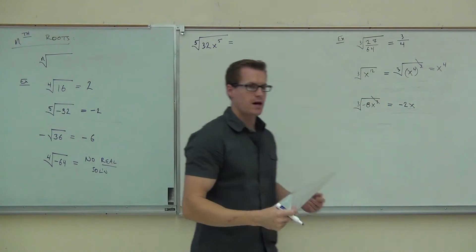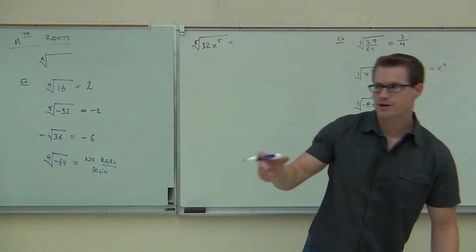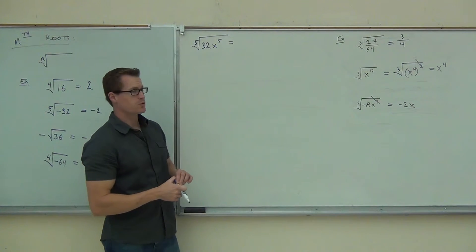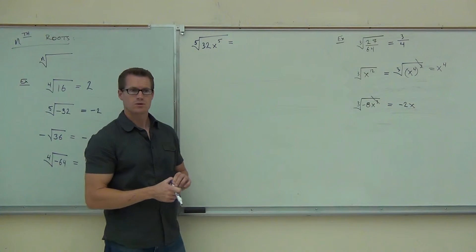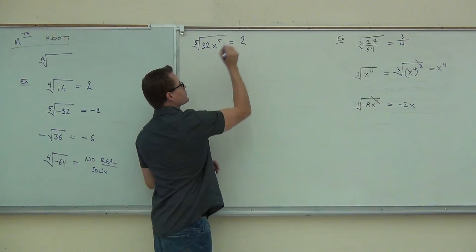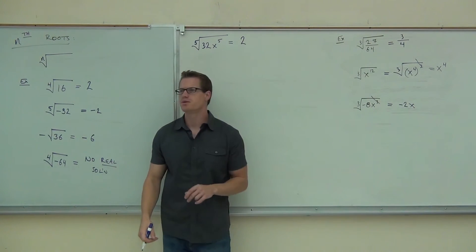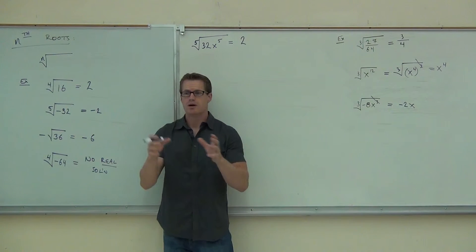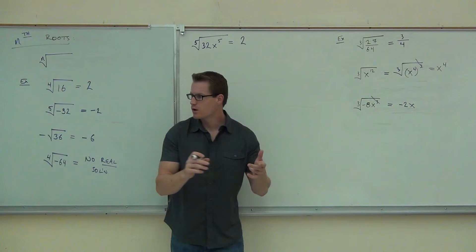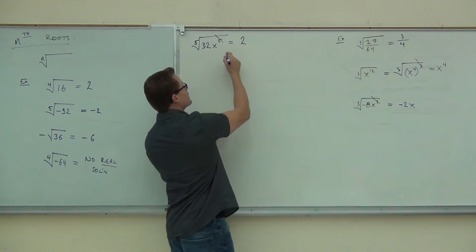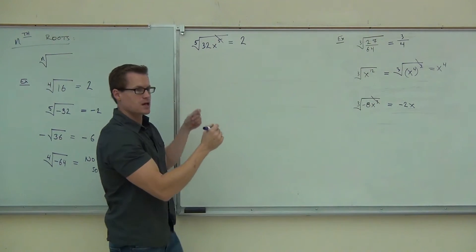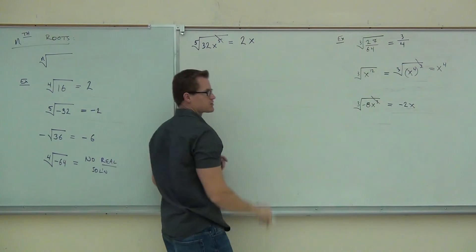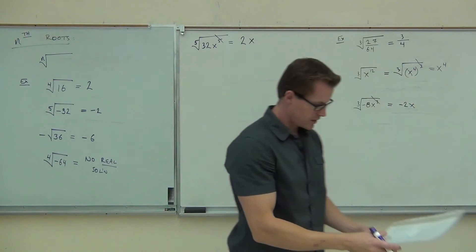Can we deal with variables inside of any type of root? Sure. What is the fifth root of 32? How about the fifth root of x to the fifth — can you do that? How much do you think it is? x. Exactly. The same principles apply. Fifth root, fifth power — those are inverses. No matter what your n is, if you have that power inside your radical, you can simplify it. So that's just 2x.